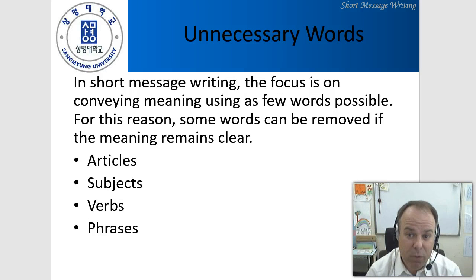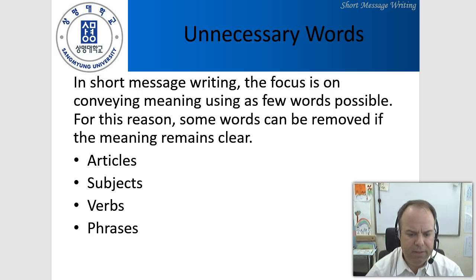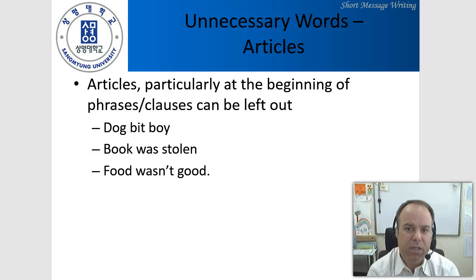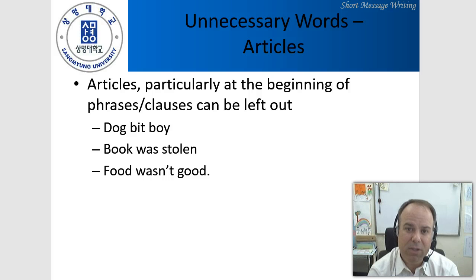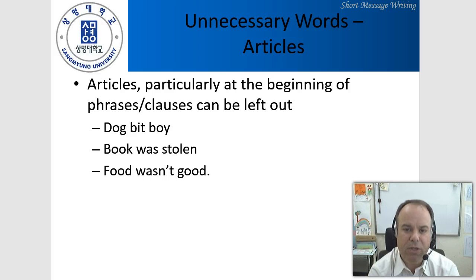Sometimes abbreviation isn't enough — we can just get rid of words entirely, or even phrases. Things we can get rid of include articles, subjects, verbs, and some longer phrases. Articles can be left out because they're understood from context. For example, 'dog bit boy' instead of 'the dog bit the boy.' 'Book was stolen' — you understand the meaning. 'Food wasn't good.' You don't really need the articles because they can be understood through the context of the conversation.